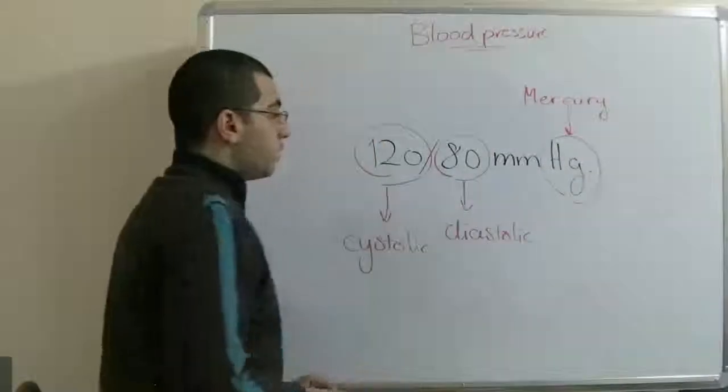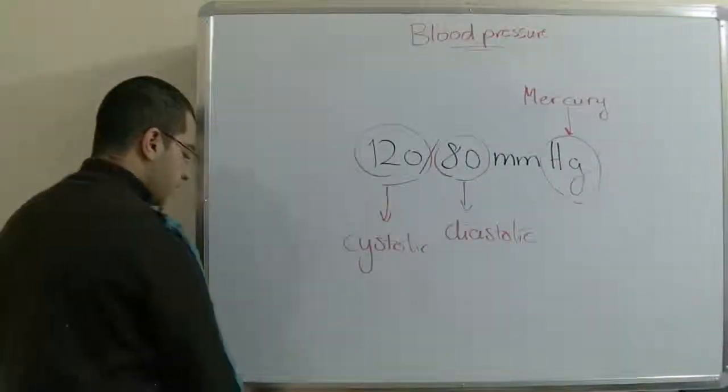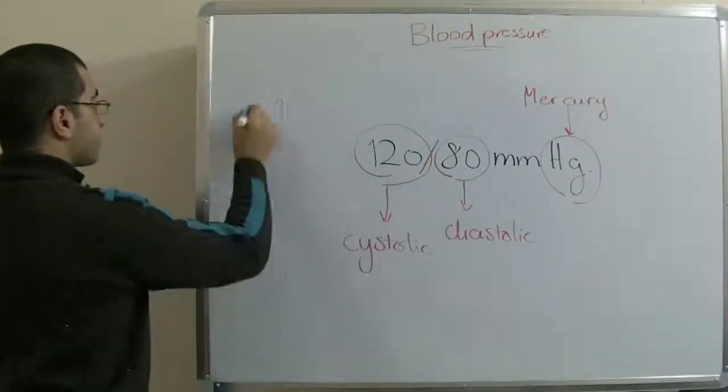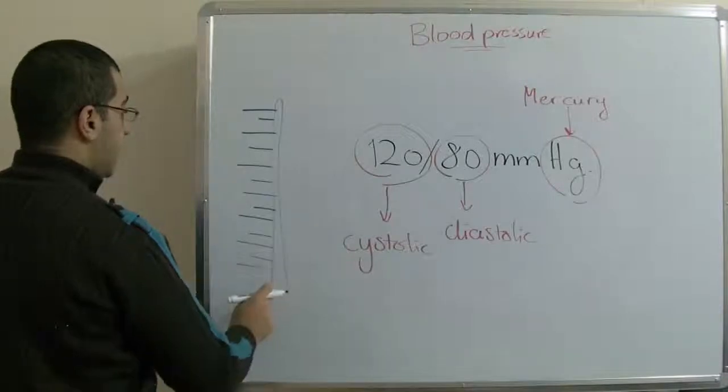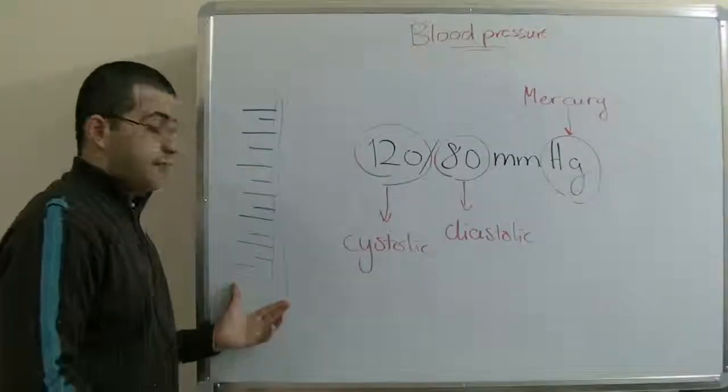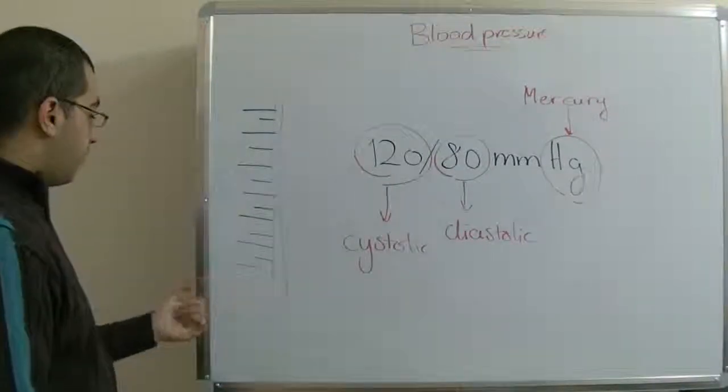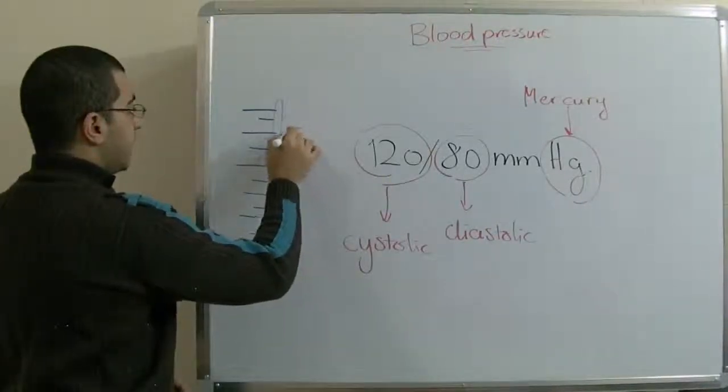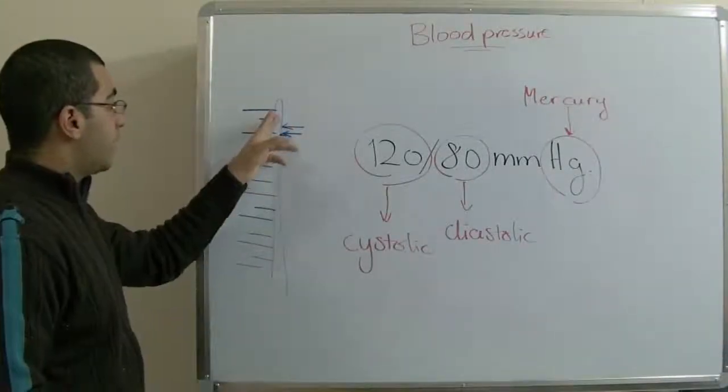The instruments used to measure the blood pressure contain mercury. The mechanism of these are that there is a scale like this and a tube here. This tube contains mercury. Also, the device has a pump. So when the one who measures the blood pressure pumps this, the mercury level ascends till it reaches a certain level that he decides. And then he releases the pump, so the mercury begins to descend.